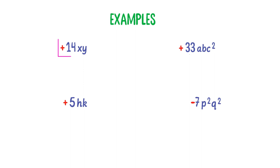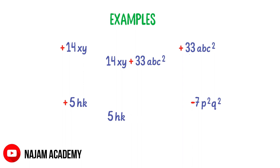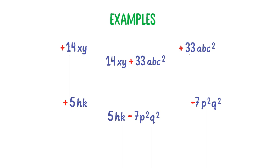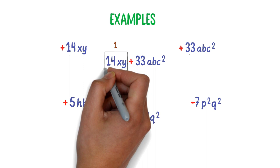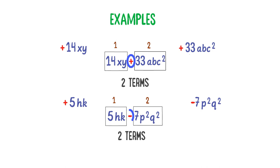I take the first term and write plus 14XY, then take another term and write plus 33ABC squared — so I have joined 2 terms. Then plus 5HK and minus 7P squared Q squared — again I have joined 2 terms. These two terms are joined together by the negative sign. To combine different algebraic terms, we either put a positive or negative sign between them.